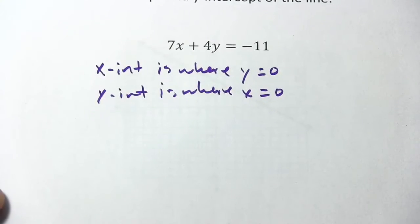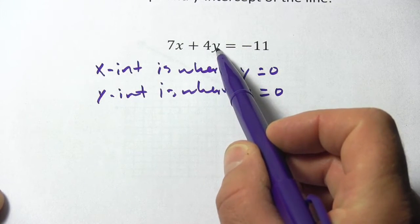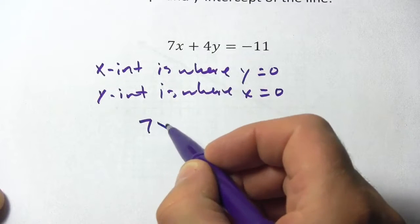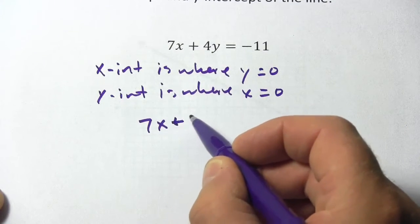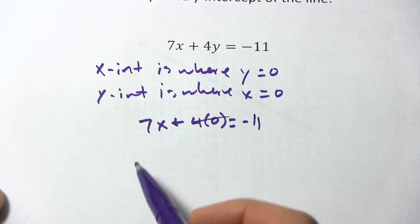So what we can actually do to find the x-intercept is put in 0 for y. If we do that, 7x plus 4 times 0 equals negative 11, well this whole chunk just disappears.